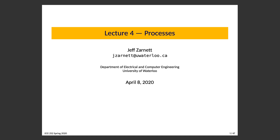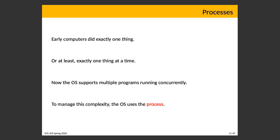Lecture 4: Processes. Early computers, as well as a number of modern embedded systems, did exactly one thing, or at the very least, exactly one thing at a time. At that time, the program that was running had access to all the resources available in the system, so managing resources wasn't such a big problem. Now, your modern operating system supports many different programs running concurrently.